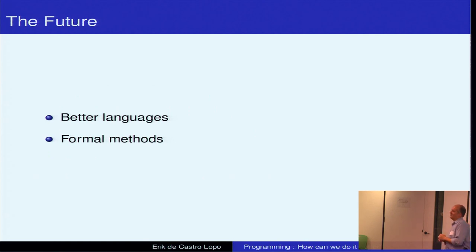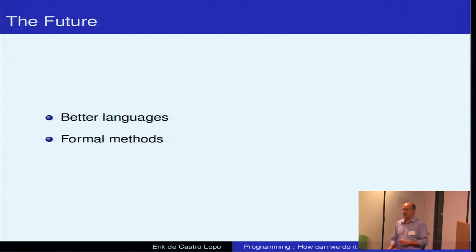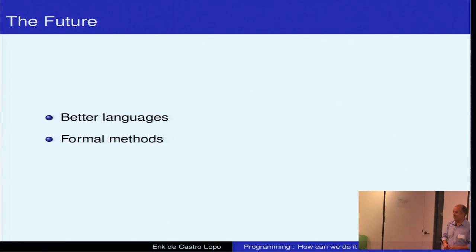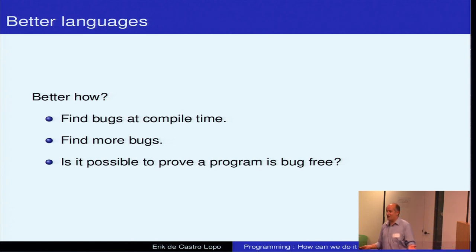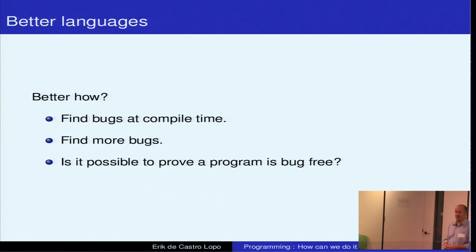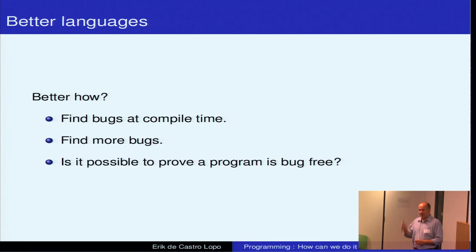Now I want to look at the future — the one that really interests me. I'm going to warn you that I am not an academic; I am a practising working programmer and this is the stuff that's coming out of academia. I think this is where programming for people like me — practising programmers — is going to go. I think the first thing is we're going to have better languages. Last time I basically said that all of our current programming languages suck — none of them are any good for reliably writing bug-free code. Better languages will find more bugs at compile time.